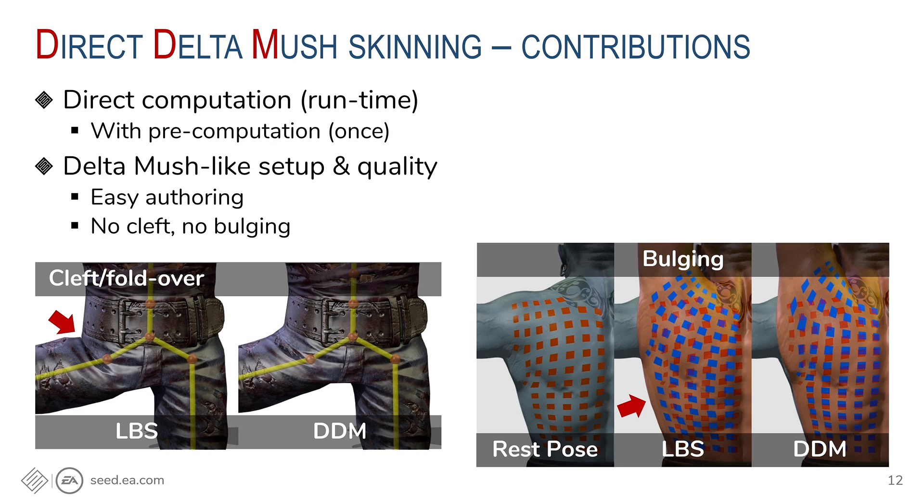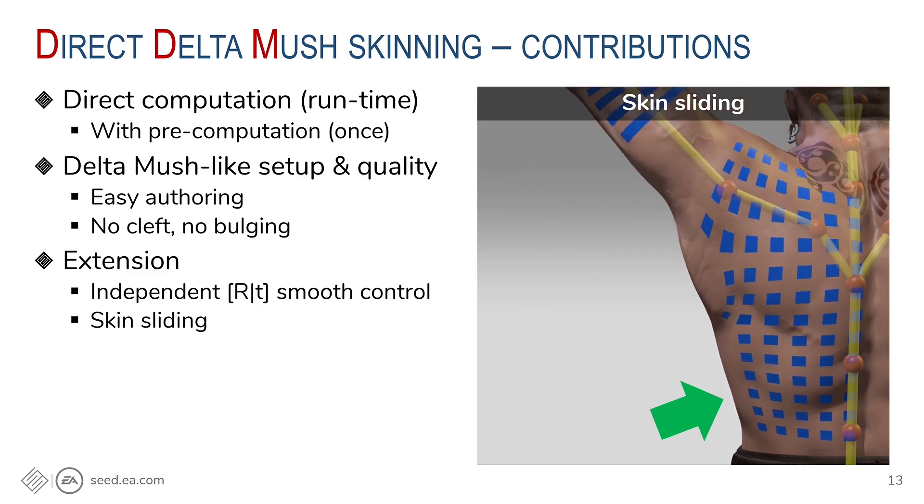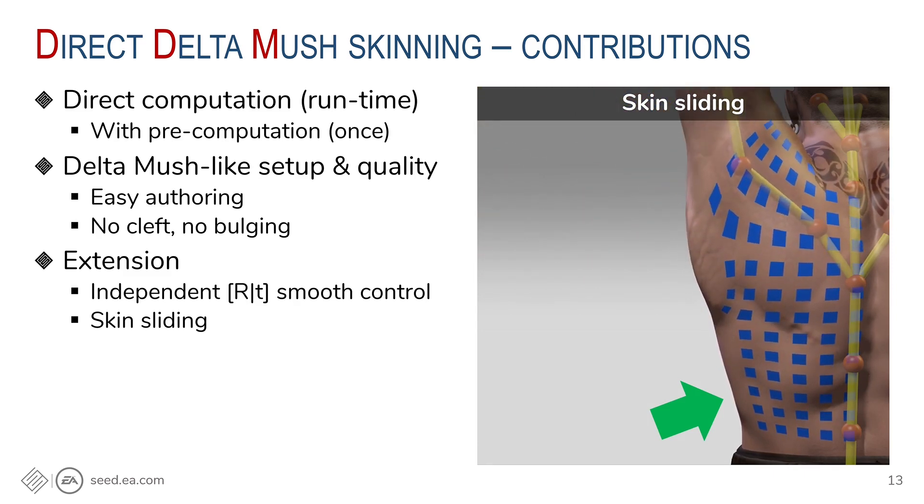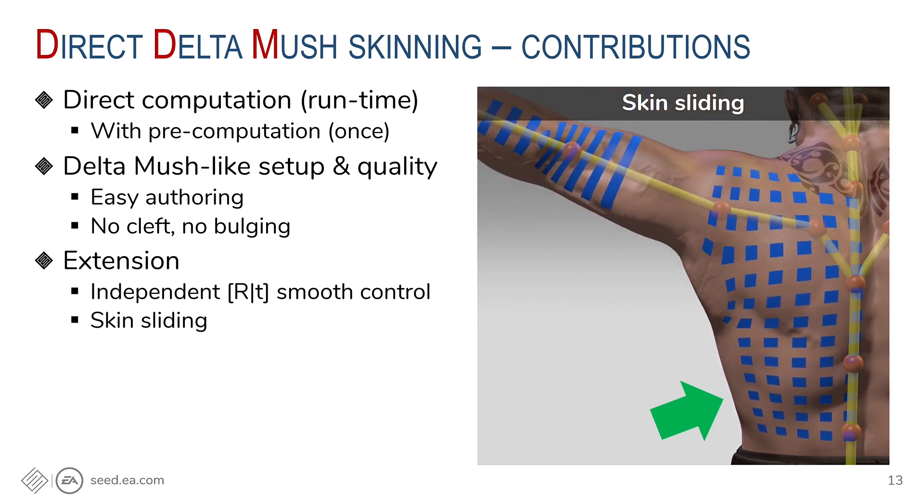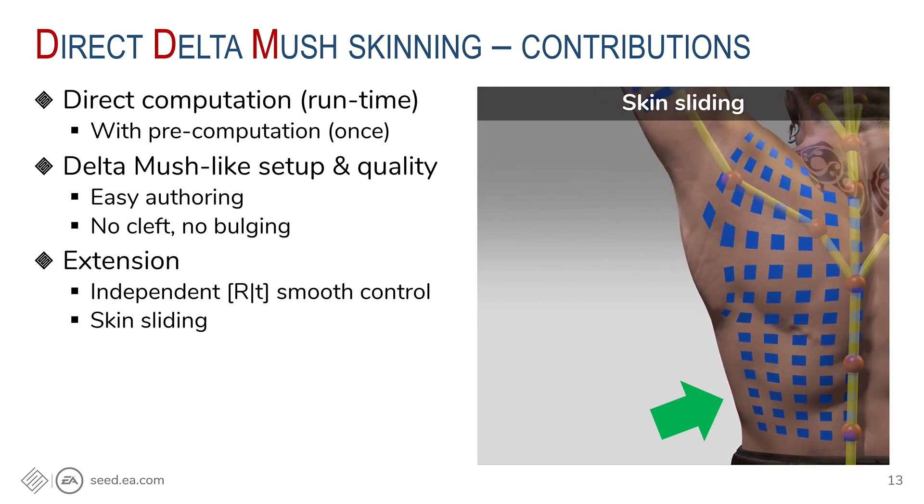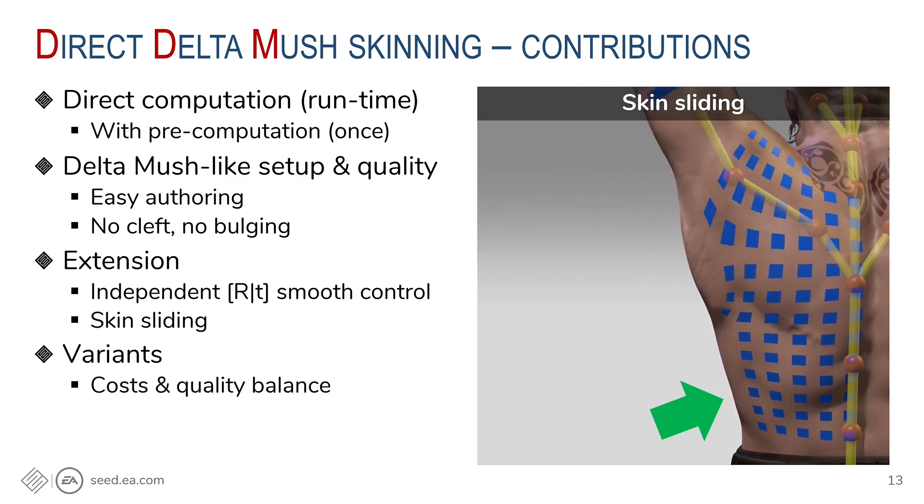So with that inspiration, we rework the math and make a direct model that respects all the good of the original Delta mush, which means high-quality deformation with no weight painting. We even extend the original model to improve the quality. Here, we show the skin sliding effect produced by setting different smoothness amount of rotation and translation. To our knowledge, it's the first direct model that can do skin sliding. And finally, we offer different variants to balance between computing, storage costs and deformation quality.